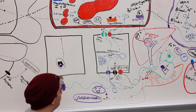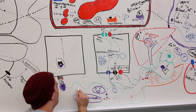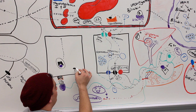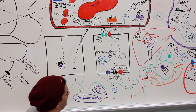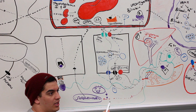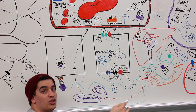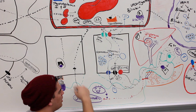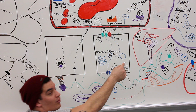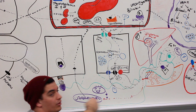Now look at this urobilinogen. A small portion of it — about 10% — can actually get reabsorbed back into the bloodstream. Some of it can go to the kidney, and when it does, it's what causes the yellow color of urine. It's called urobilinogen when in the bloodstream, but when excreted through the kidneys in urine, it's called urobilin. Some of the urobilinogen can also get recycled — going back to conjugate with glucuronic acid through what's called the enterohepatic circulation.